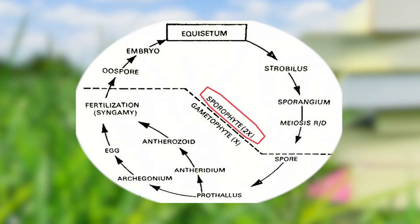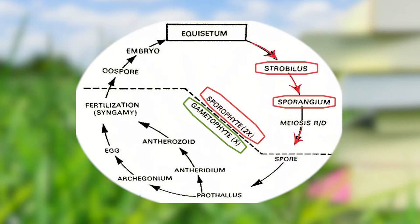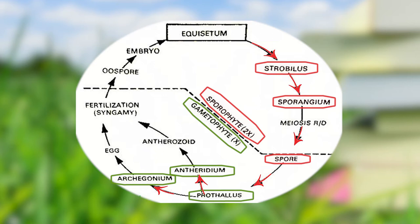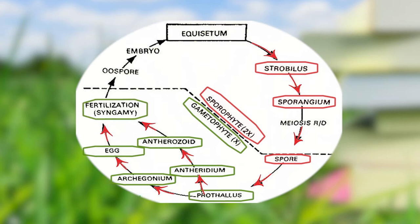Now we will be talking about reproduction. There are two phases: the sporophytic phase and the gametophytic phase. The sporophytic phase comprises the strobilus, the sporangium, and the spores. Once the spores start germinating, they form the antheridia and archegonium, which further form the egg and antherozoids. With fertilization, the embryo is produced. This is the life cycle of Equisetum.